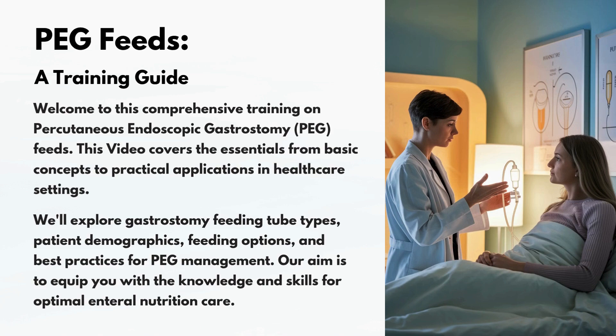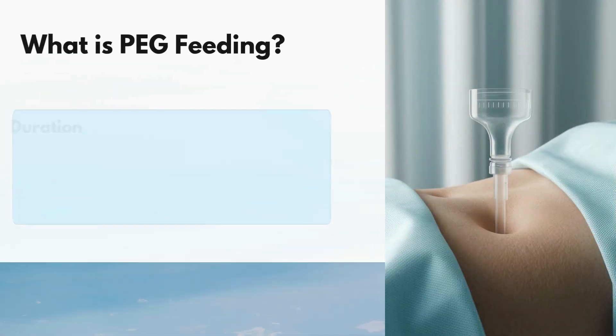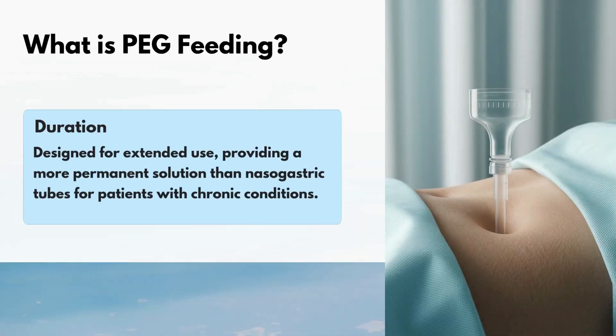What is PEG feeding? Percutaneous endoscopic gastrostomy PEG is a medical procedure in which a feeding tube is inserted directly into the stomach through the abdominal wall using an endoscope. Its purpose is for long-term nutrition, hydration, and medication administration in patients who cannot eat or drink safely through the mouth. It is designed for extended use, providing a more permanent solution than a nasogastric tube.